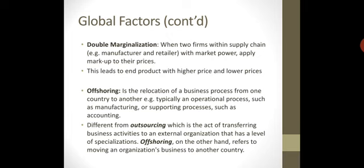The next concept is double marginalization. Double marginalization is when there are two parties in one supply chain — for example, a manufacturer and a retailer — both with market power, meaning they can both bargain and charge their own prices. When two firms within the supply chain, such as a manufacturer and retailer with market power, both apply markup to their prices, it leads to an end product with a higher price and lower sales.